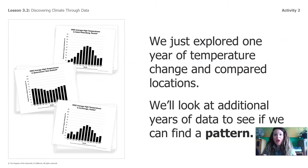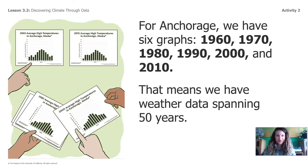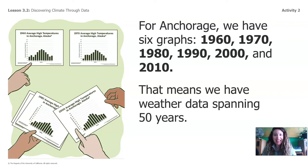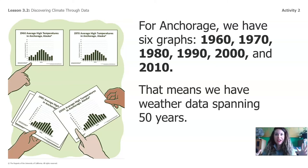Okay, welcome back. We just explored one year of temperature change and compared locations. Now we're going to look at additional years of data to see if we can find a pattern. Do you remember Anchorage, Alaska, that had the big mountains covered in snow? For Anchorage, we have six graphs: 1960, 1970, 1980, 1990, 2000, and 2010. That means we have weather data for Anchorage that spans 50 years. Wow, that is a lot of weather data. We're really going to be able to find a pattern.